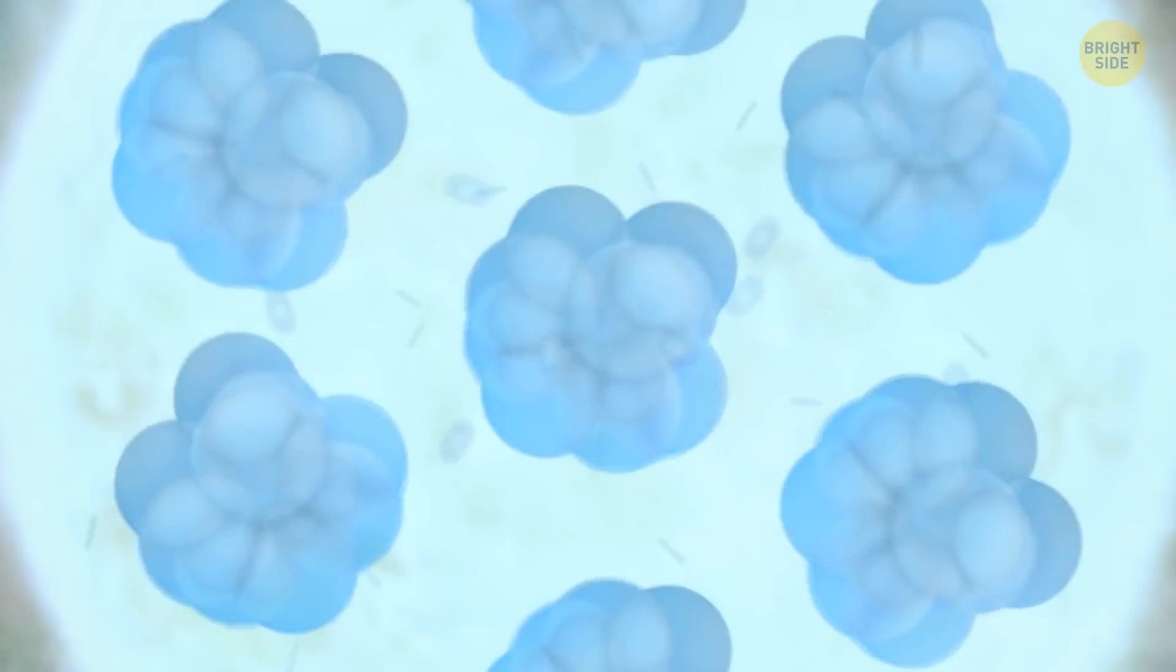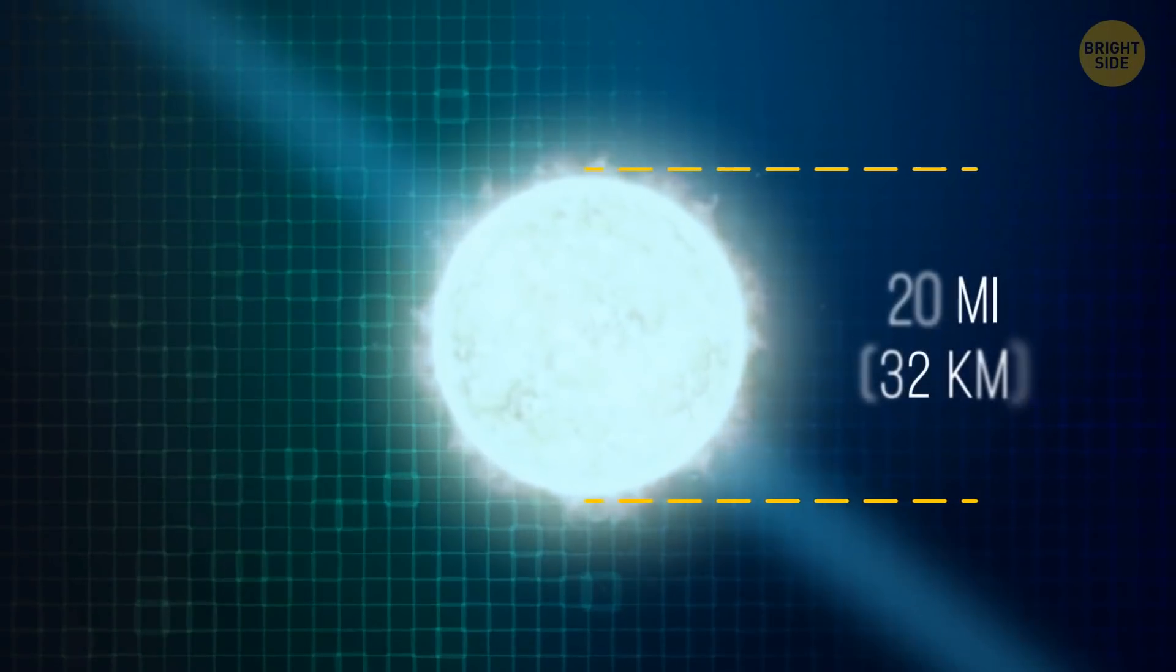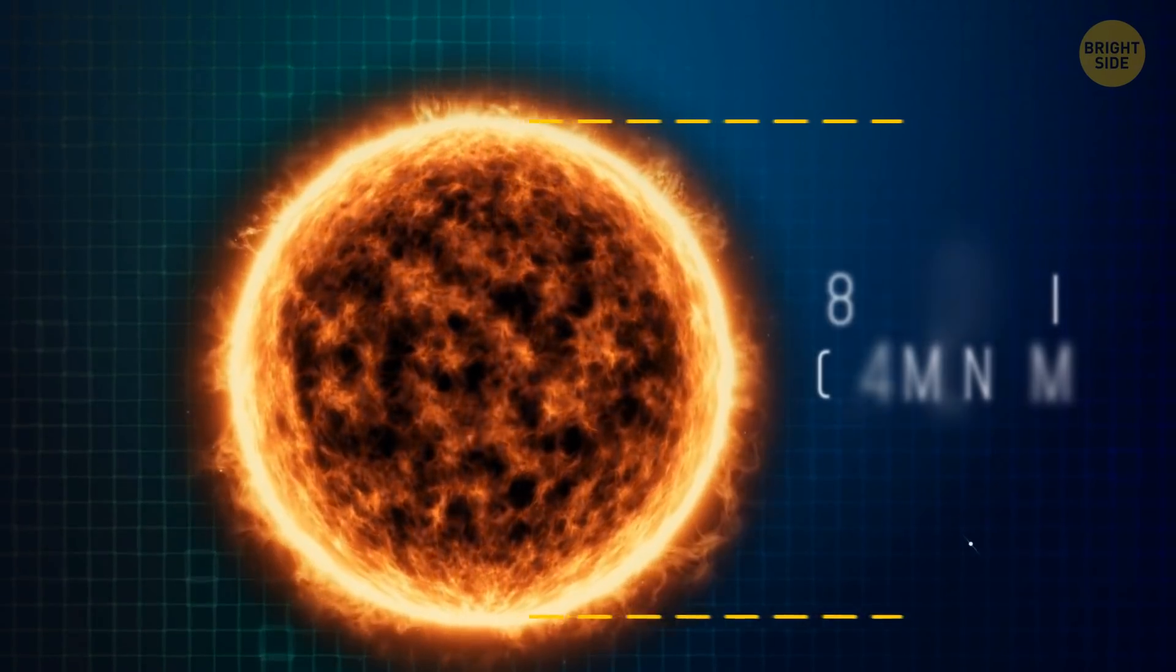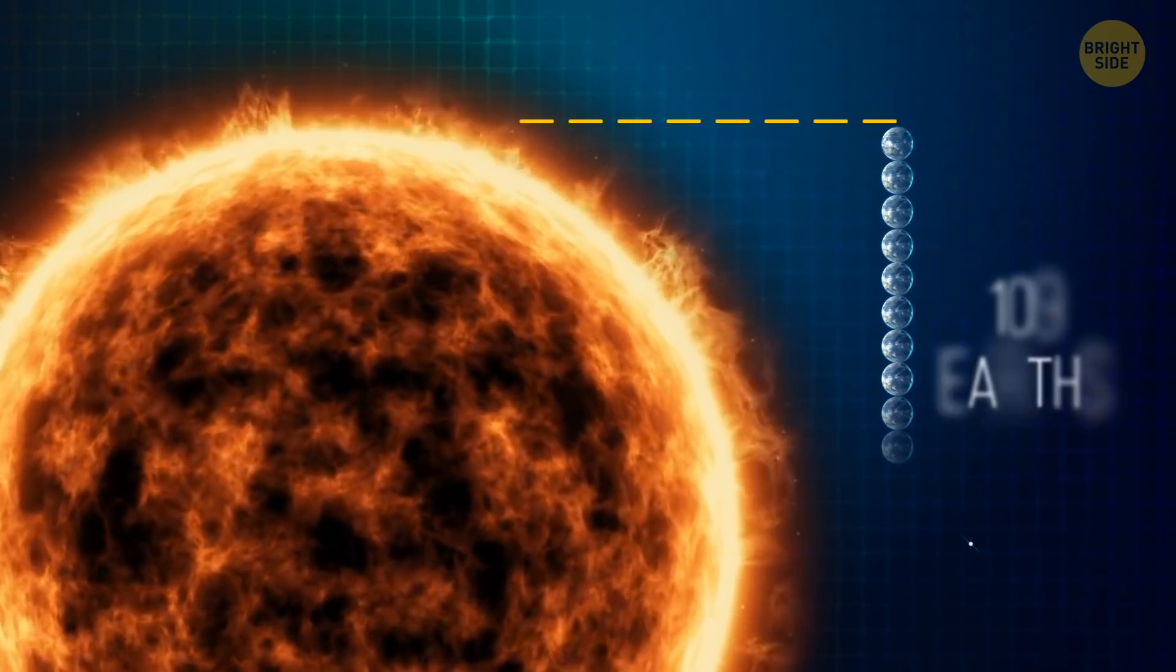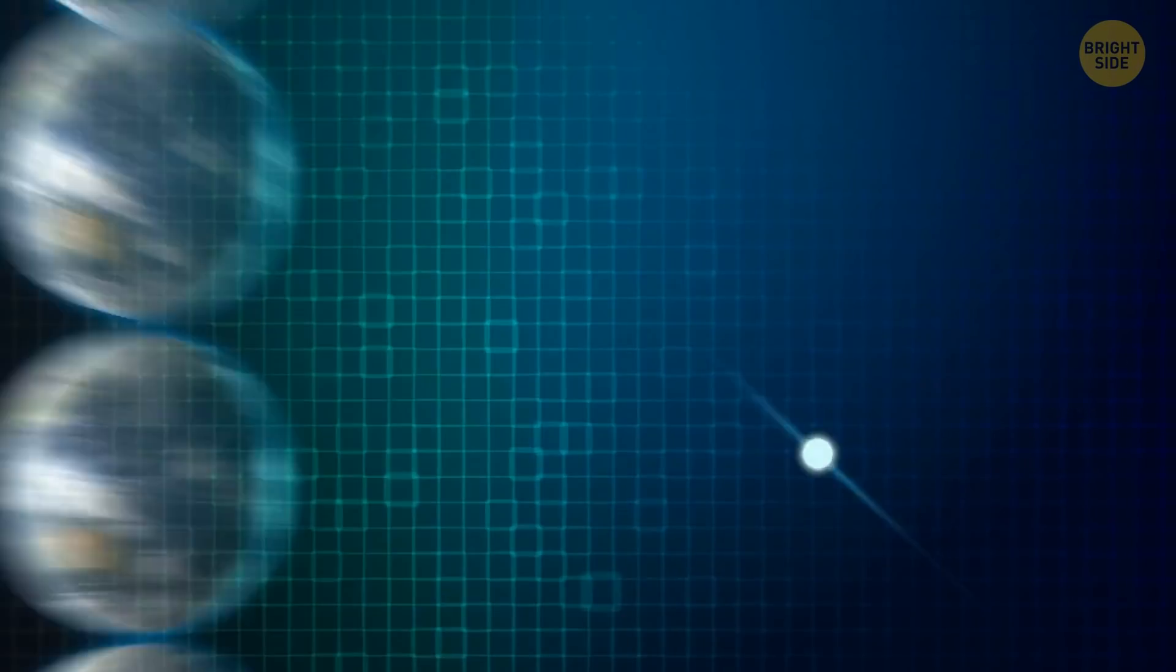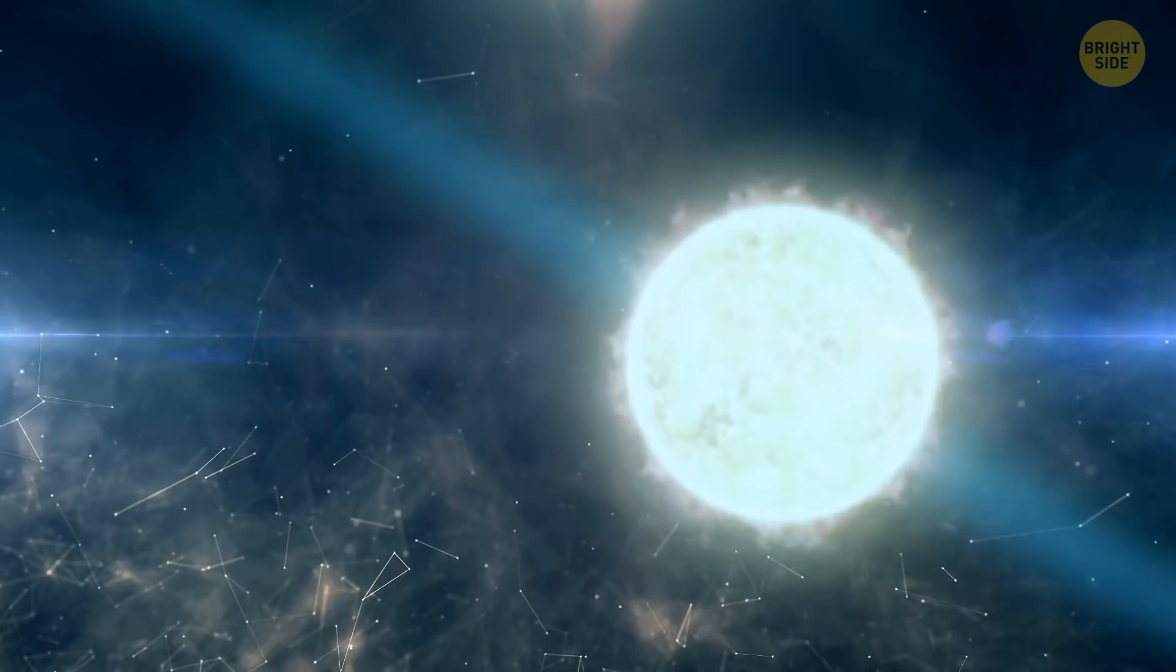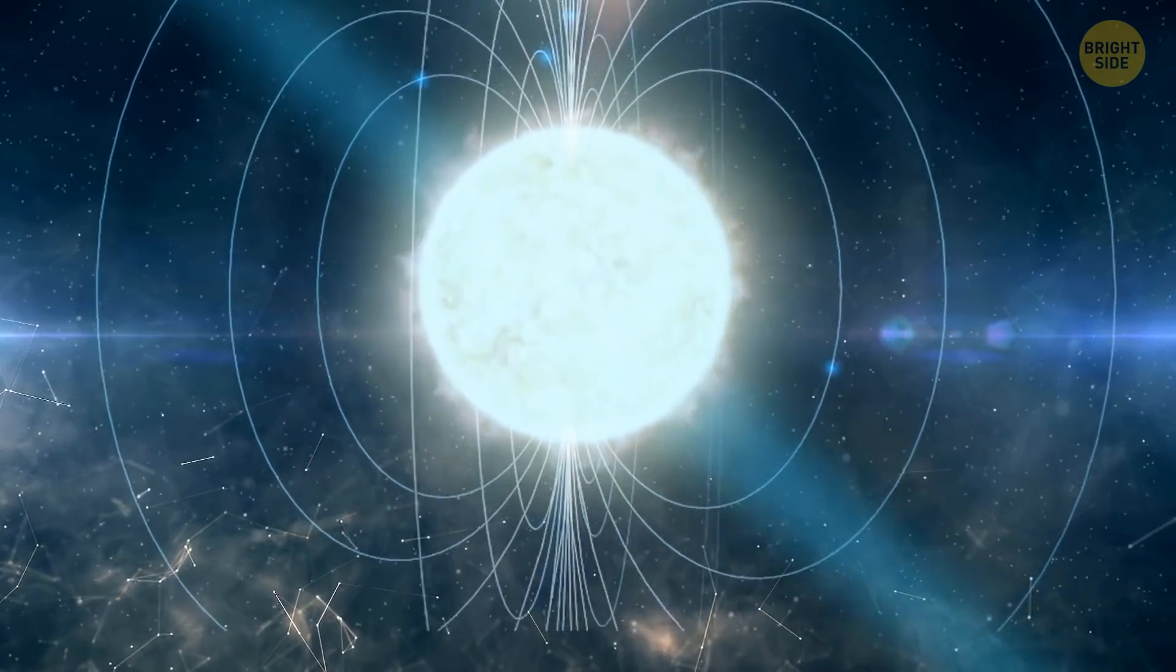These stars are mostly made up of neutrons, and are rarely larger than 20 miles across. For comparison, our sun is almost 865,000 miles across, which is 109 Earths put side to side. But don't let this relatively tiny size fool you. Any neutron star is at least one and a half times heavier than our sun, and has an intense magnetic field.